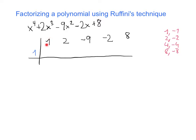Let me get started by picking, for example, the number 1. How do I proceed to apply Ruffini's technique? I take the number that's over here and I copy it down here. And now we start. I take this and I multiply by this. 1 times 1 is 1. Now I add these two numbers together. 2 plus 1 gives me 3. 3 multiplied times 1 is 3. 3 plus minus 9 is minus 6. Minus 6 times 1 is minus 6. Plus minus 2 is minus 8. Minus 8 times 1 is minus 8. And therefore 8 plus minus 8 gives me 0.